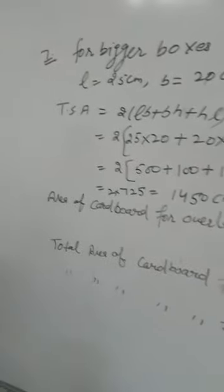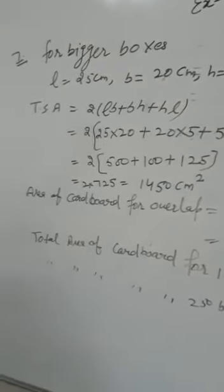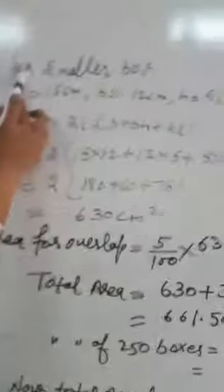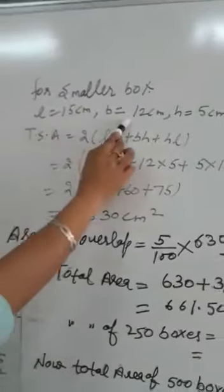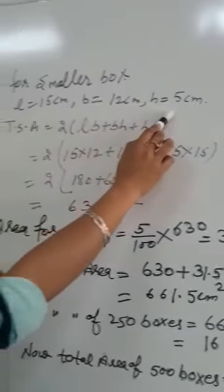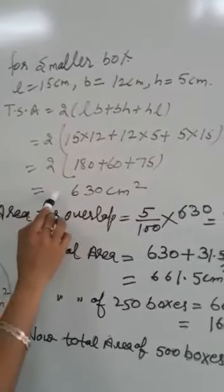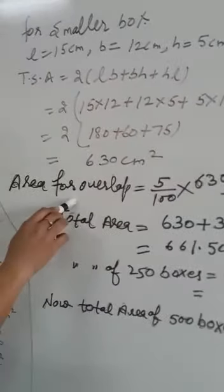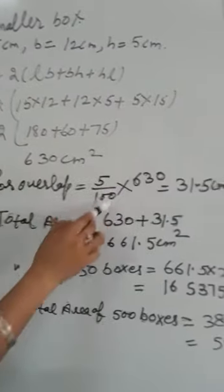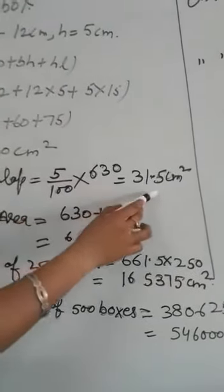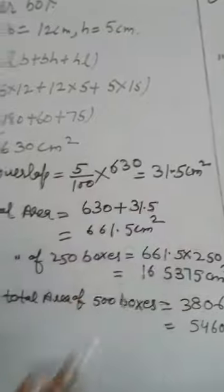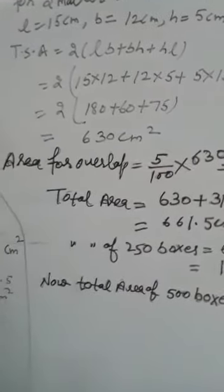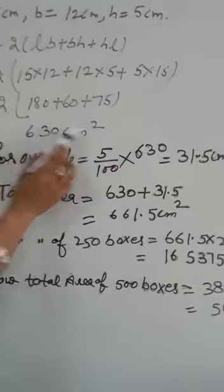Now in the same way we will find the area for smaller box. Second type of box given, here length 15, breadth 12 and height 5 cm with the same formula. Firstly we will find total surface area. Then here also extra 5% is required. So 5 upon 100 into 630 that is 31.5 cm square.